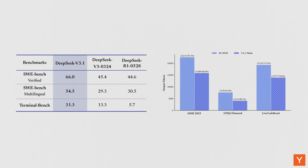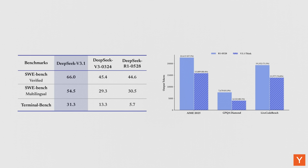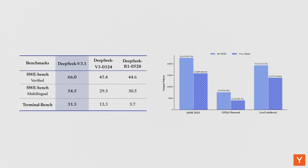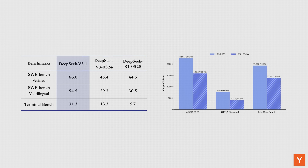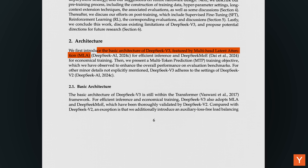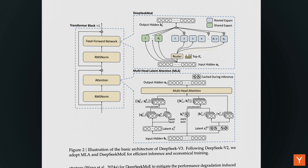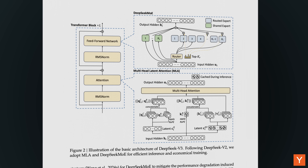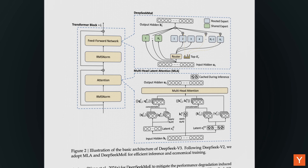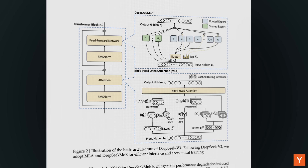V3.1 also improves tool use and agent performance thanks to more advanced post-training. In practice, this means V3.1 keeps the same core architecture as V3, but delivers stronger reasoning, smarter tool use, and greater performance. One thing that sets V3 apart is that it uses a different attention mechanism than GPT-OSS and Qwen3. V3 makes use of MLA (Multi-head Latent Attention), which compresses keys and values into a smaller latent space before caching them, then decompresses them during inference. The previous DeepSeek V2 paper found MLA delivers greater memory savings and better modeling performance than GQA, especially in huge long-context models.